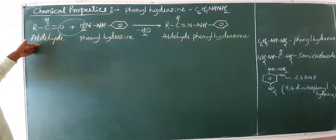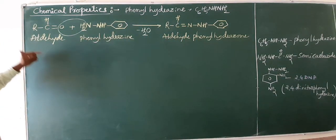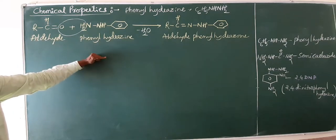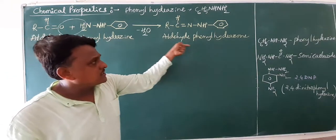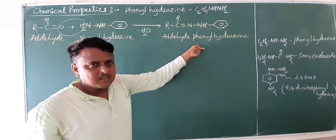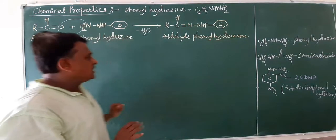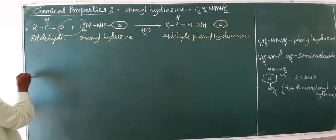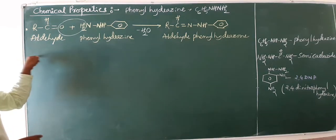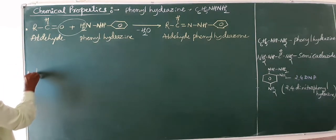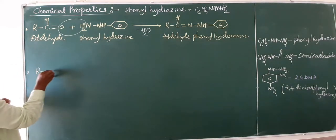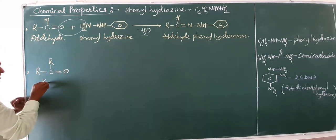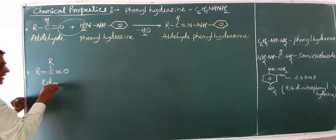You can practice with an example: acetaldehyde reacts with phenyl hydrazine to form acetaldehyde phenyl hydrazone. Now the general reaction of ketone — the formula is R-C(=O)-R, this is your ketone.